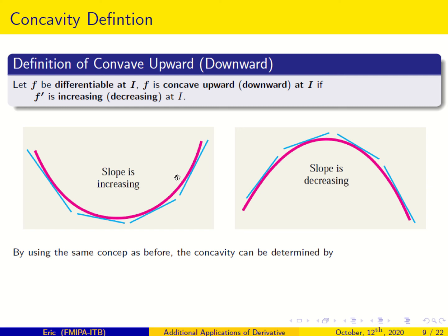What about this one? The slope is decreasing. So when the slope is decreasing, we call f concave downward. By using the same concept as before, the concavity can be determined by using the second derivative.